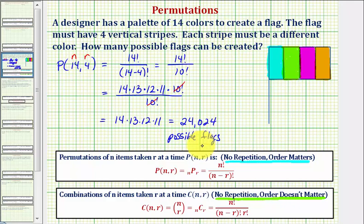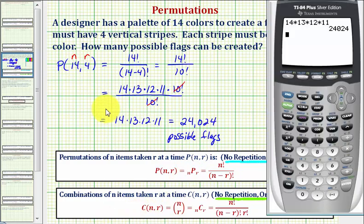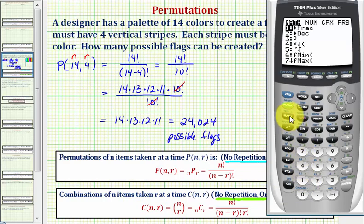I also want to show how we could have evaluated the original permutation on the calculator using this notation here. So back to the calculator. For 14 permute four, we'd first enter 14, which is N, then press math.